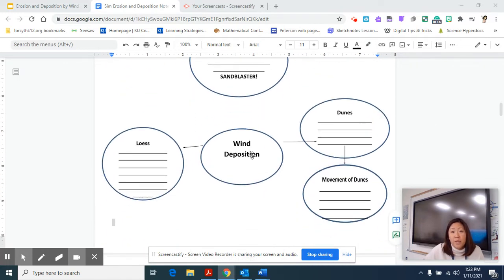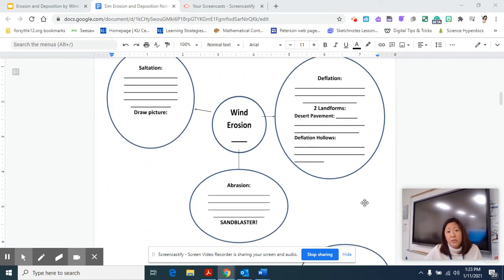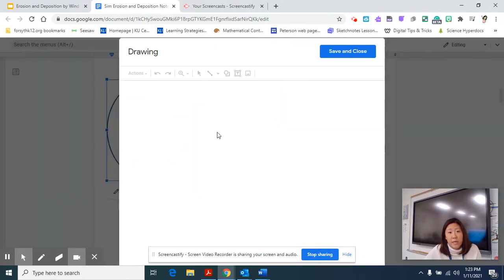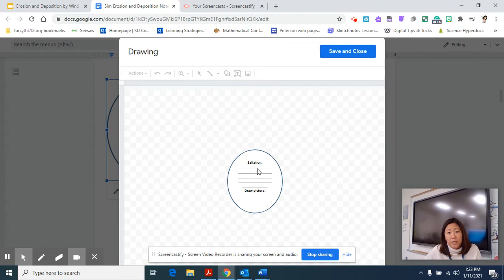If you scroll down to the bottom, then you'll also see wind deposition. Deposition means what happens to sediment once it settles. And when it settles, it creates two different things. One is called loess, and then the second one is called dunes. This third box over here is just telling you how the dunes move and in what direction that they move in. So that's how your notes are set up for today. And as you're going through it, you can double click on here, and that's how you would actually type into the box right there.